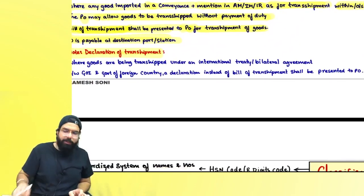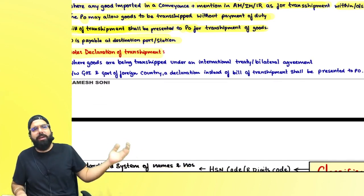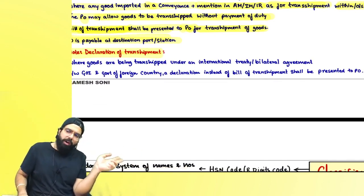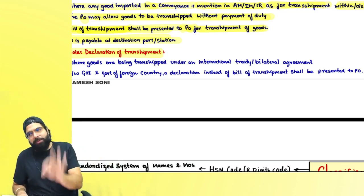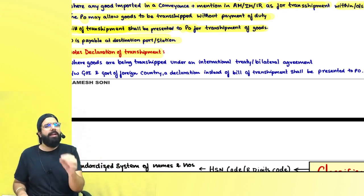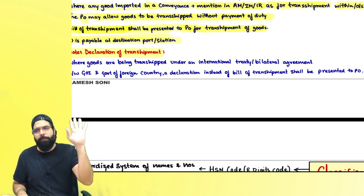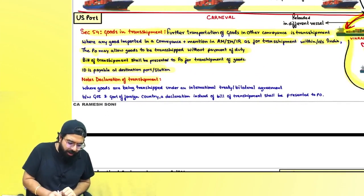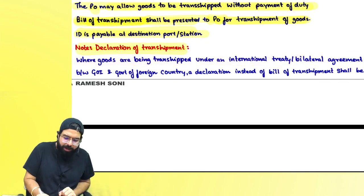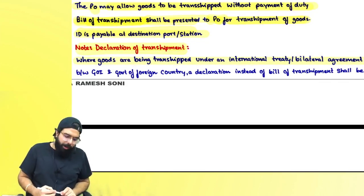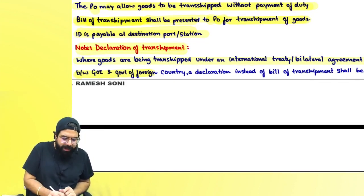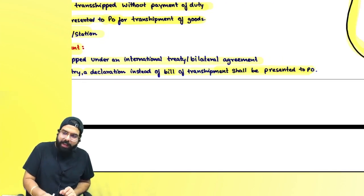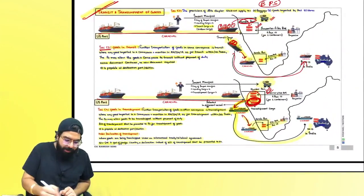Declaration of transshipment: whenever the Indian government and another country's government have a bilateral agreement, instead of a bill of transshipment, a declaration of transshipment can be presented to the proper officer. When goods are being transferred under an international treaty or bilateral agreement between the Government of India and a foreign country, a declaration instead of a bill of transshipment shall be presented to the proper officer.